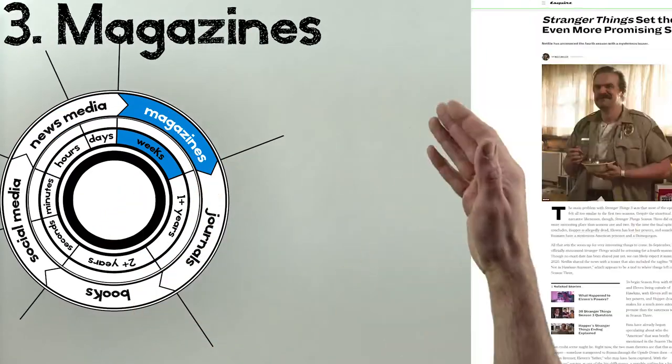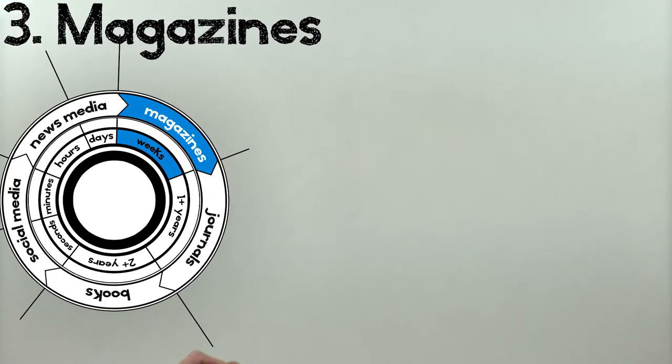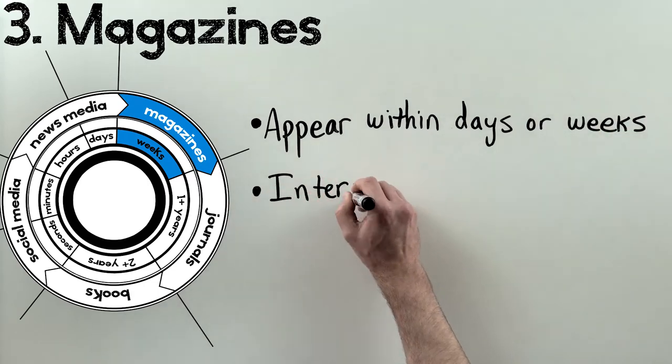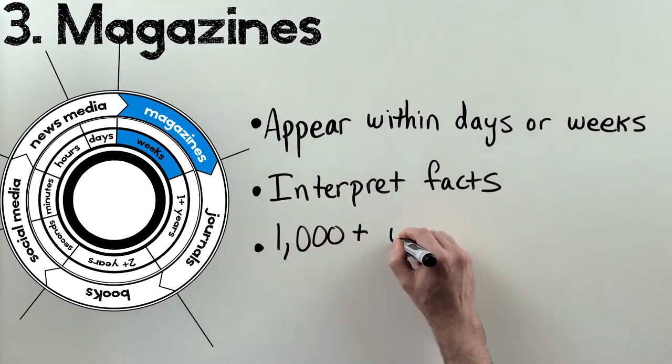Magazines, and increasingly blogs, are the third stage. These can be print or online, and show up in the days and weeks following an event. Magazines use all that time to take the facts from the news and interpret them, often in a thousand words or more.